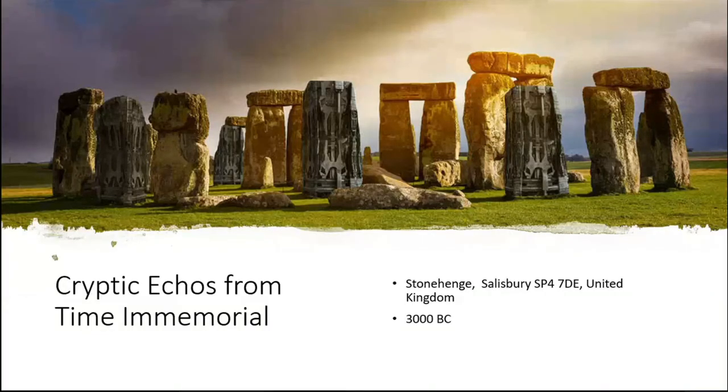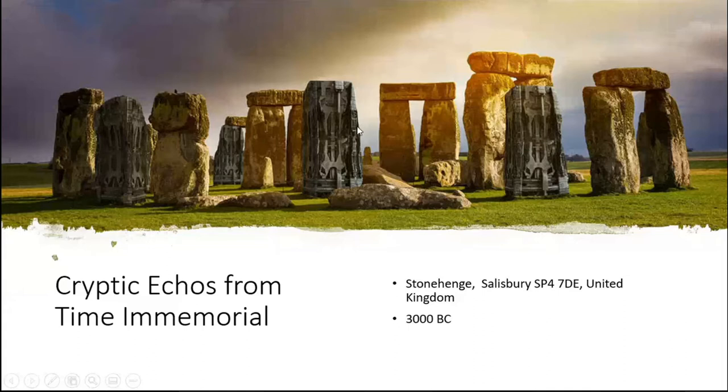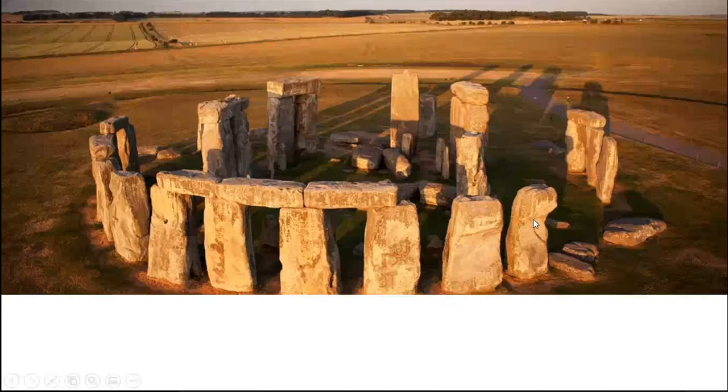This is the cryptic ethos from time immemorial. You can see this is Stonehenge. Many of you are familiar with this image. It was created around 3000 BC in UK, United Kingdom. But still we don't know why actually this structure was created and what are the things actually designed on the stones and why they are arranged in such manner. So this is kind of how you can treat as a cipher.